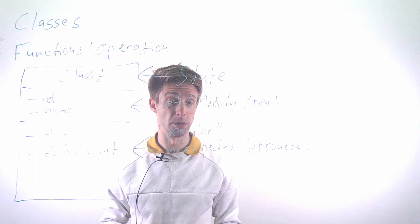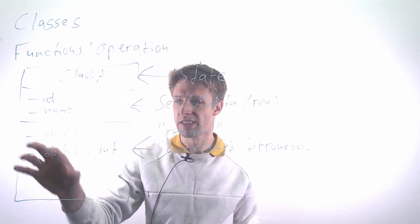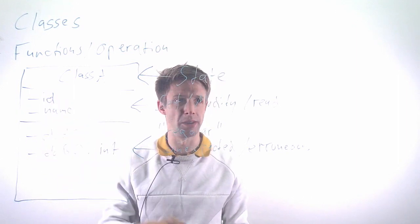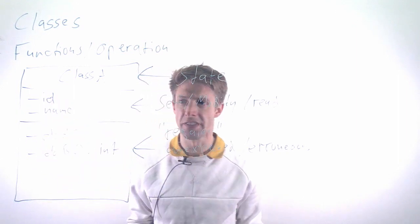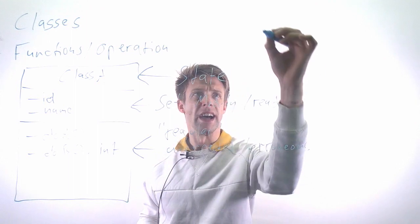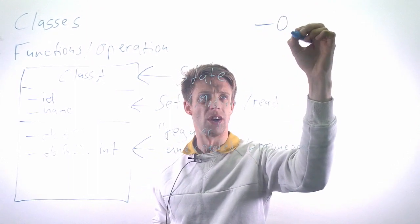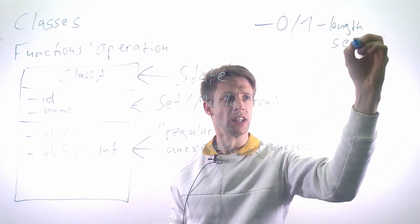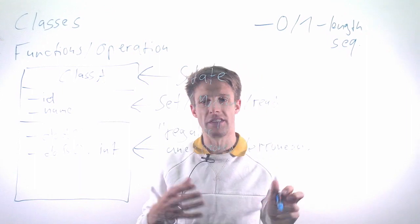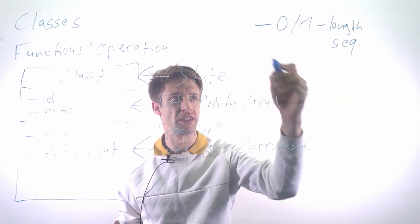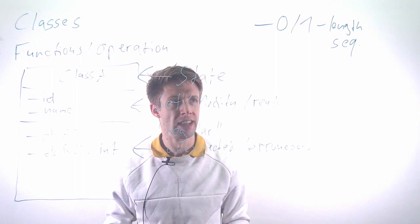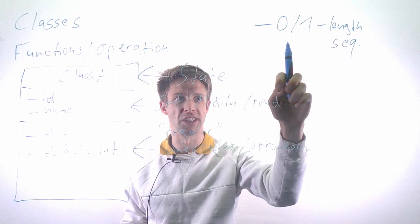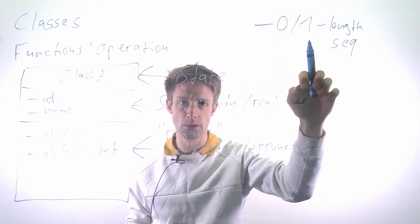Some heuristics for setting values or input parameters include things that typically go wrong. For example, zero or one length sequences. Imagine you have an array as input. Typical bugs include issues where the code assumes there is at least one or two elements.